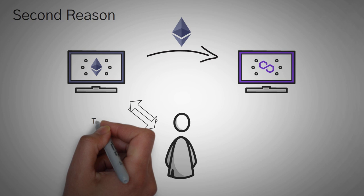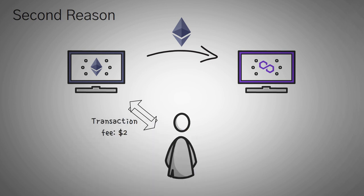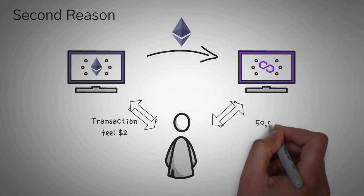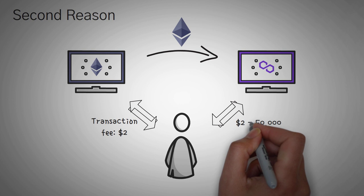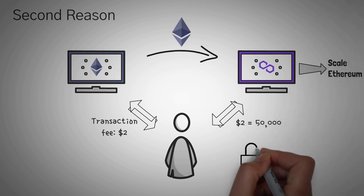The second big reason you would switch your native ethereum on the ethereum network to the polygon network is because a transaction on the ethereum network right now costs around $2, while a transaction on the polygon network is so cheap, you can perform 50,000 transactions for $2. Polygon, in fact, was created as a way to scale ethereum. However, it currently doesn't have the same security that ethereum does.